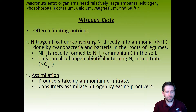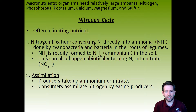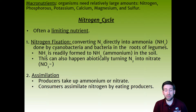Step two is assimilation: producers take up ammonium or nitrate (NO3-). A plant can't breathe in atmospheric nitrogen directly, so it needs nitrogen fixation first, and once converted, it can take up and assimilate that nitrogen. Consumers then assimilate nitrogen by eating producers — nitrogen moves up the food chain from bacteria to plant to consumer.